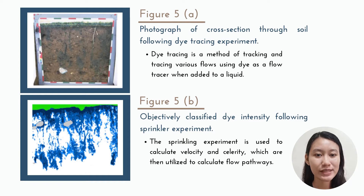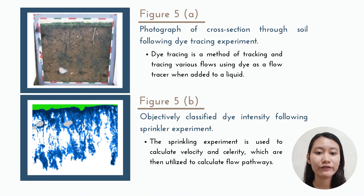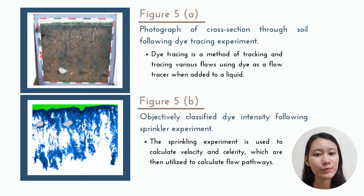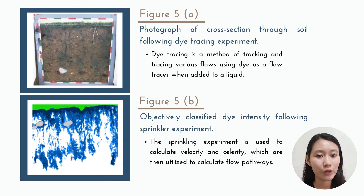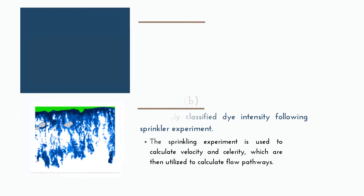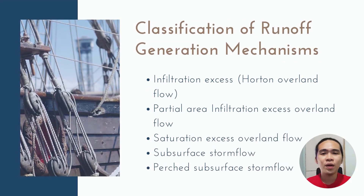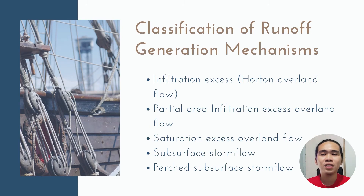The second figure shows the dye intensity, which is objectively classified from the first figure following excavation of the plot. It was done through a dye sprinkling experiment. The sprinkling experiment is used to calculate the velocity and celerity, which are then utilized to calculate flow pathways. Listed below are five classifications of runoff generation mechanisms. Identifying the principal runoff generation process is a fundamental challenge when designating areas of high runoff in a watershed. Among these classifications, the following are the two prevailing theories describing mechanisms of runoff generation.